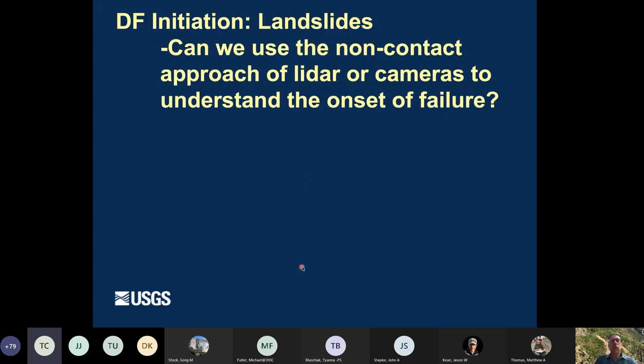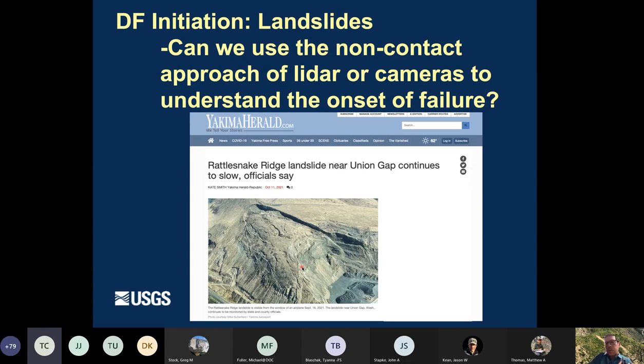So let's start off with debris flow initiation, thinking about landslides. So we started a project at the USGS debris flow flume basically asking the question, can we use a non-contact approach of LIDAR or cameras to understand the onset of failure of a landslide? And you might think, well, why would I need that? So here's an example, this Rattlesnake Ridge example of a large landslide where people knew it was beginning. There were tension cracks. This threatened a highway and it's not the kind of place that you would want to have to walk on if you could. So we wanted to use a really downscale experiment at the flume to see if we could flesh out some non-contact ways of trying to estimate landslide movement.